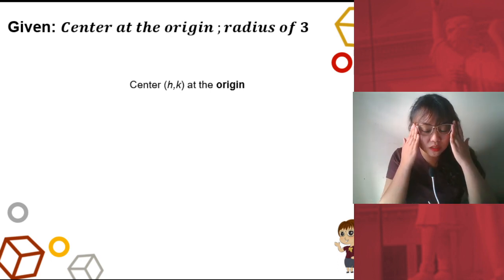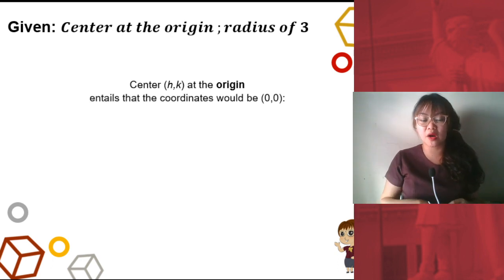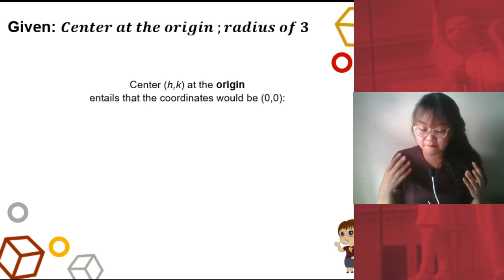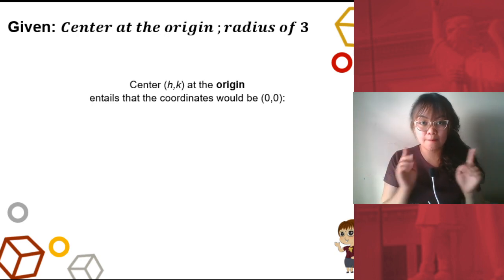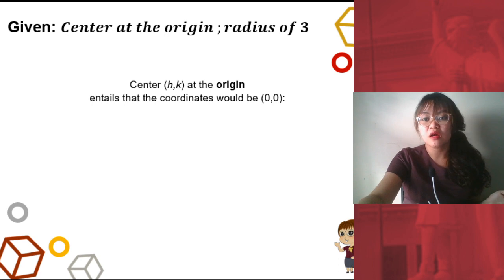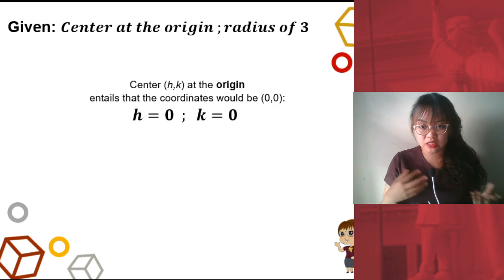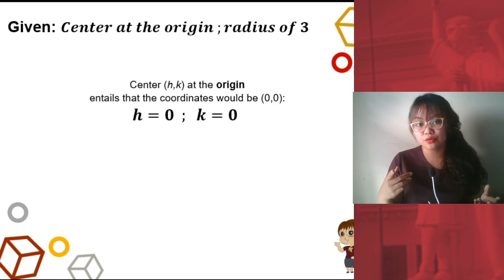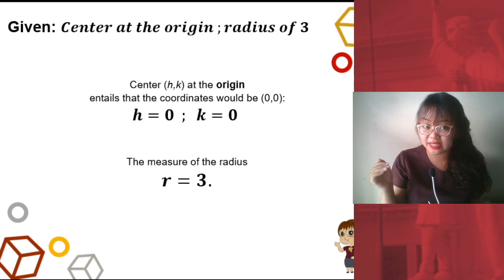The origin is where your x and y axes meet. That means the coordinates for that would be (0, 0). So the value of h would be 0 and k would also be 0. According to the given, the measure of the radius is 3, therefore r is 3.